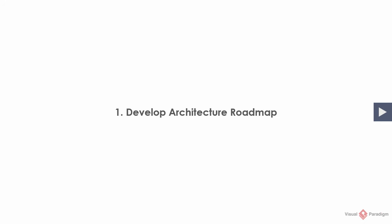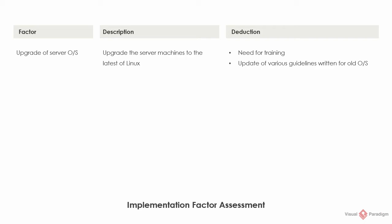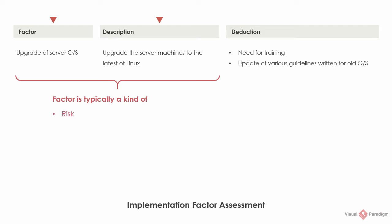Activity 1: Develop architecture roadmap. You've identified the baseline and target architecture and determined the gap in between. Here you are going to determine and confirm what changes would be involved during the transformation from baseline to target by creating an implementation factor assessment and deduction matrix. A factor is a situation that may potentially impact the implementation of the architecture — typically a kind of risk, for example a reduction of profit due to the temporary suspension of service. An issue, for example an outdated system. An assumption, for example that staff will have the required knowledge to use the new system without further training. A dependency, for example that backup must be done before kickoff such as the consolidation of IT services.